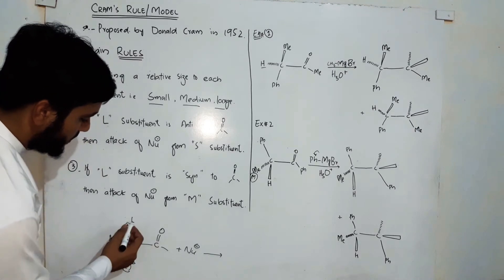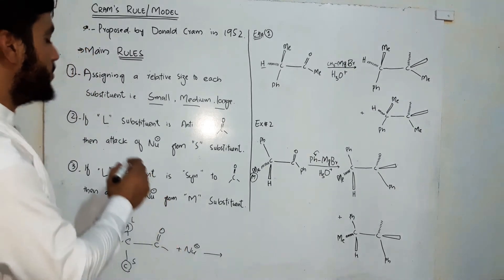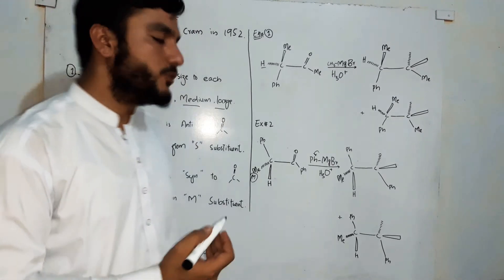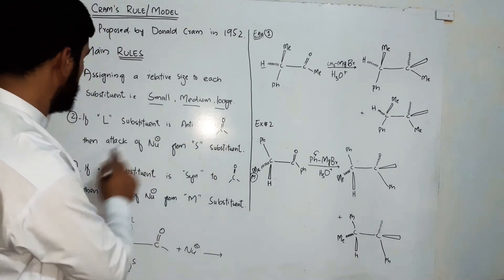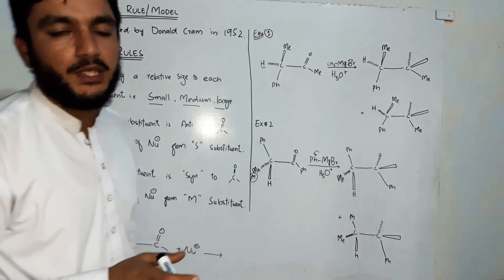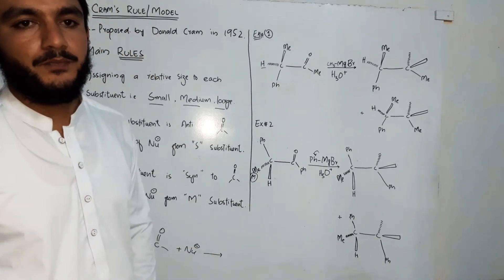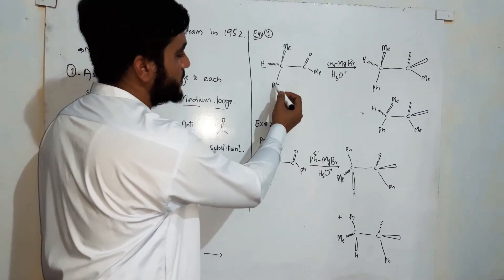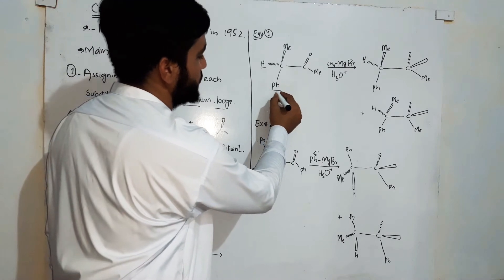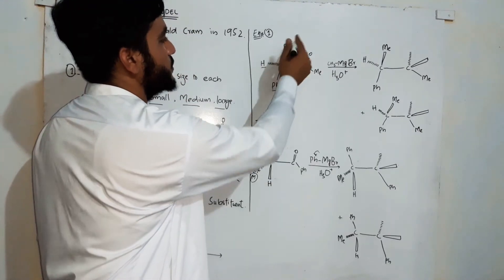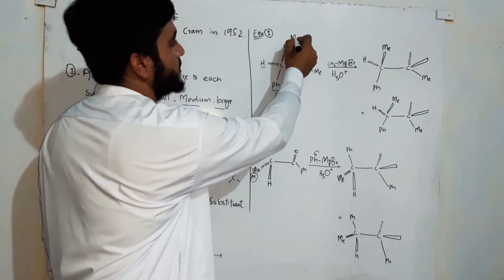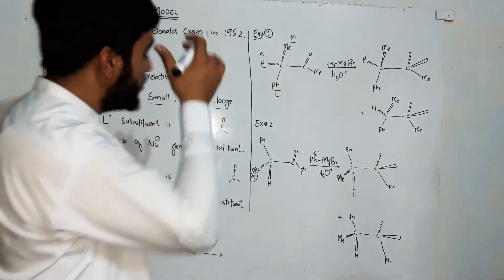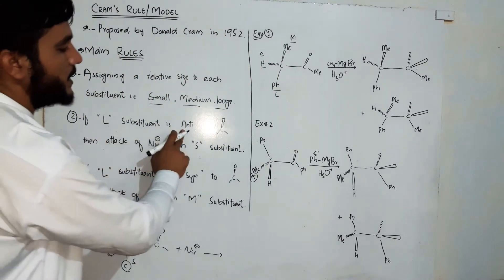Rule number two: if the large substituent is anti to the carbonyl group, then the attack of the nucleophile will occur according to the smaller substituent. For example, if phenyl is the larger substituent because it has greater mass than methyl and hydrogen, methyl is medium, and hydrogen is small.